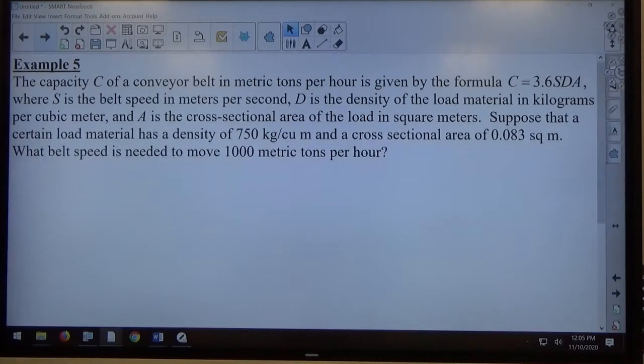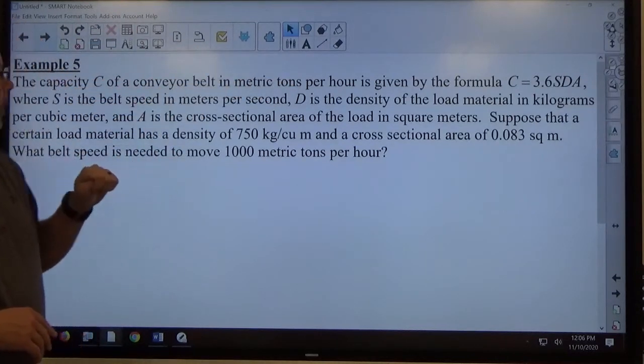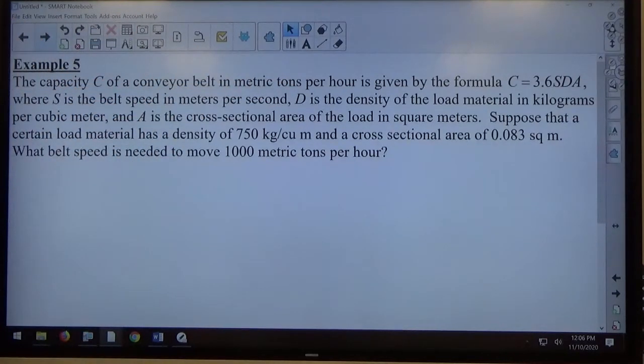Where S is the belt speed in meters per second, D is the density of the load material in kilograms per cubic meter, and A is the cross-sectional area of the load in square meters.